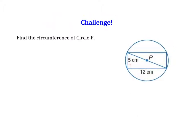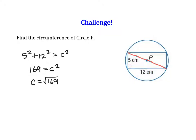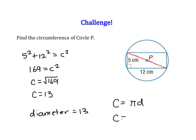Let's try this challenge problem — find the circumference of circle P. To find circumference I need the radius or diameter. Looking at the triangle formed, I notice it is a right triangle. Using the Pythagorean theorem: 5 squared plus 12 squared equals C squared. That gives 25 plus 144 equals 169 equals C squared. Taking the square root of both sides, C equals 13. This hypotenuse is also the diameter of our circle. So the diameter is 13, and the circumference is pi times 13, which is 13pi centimeters.